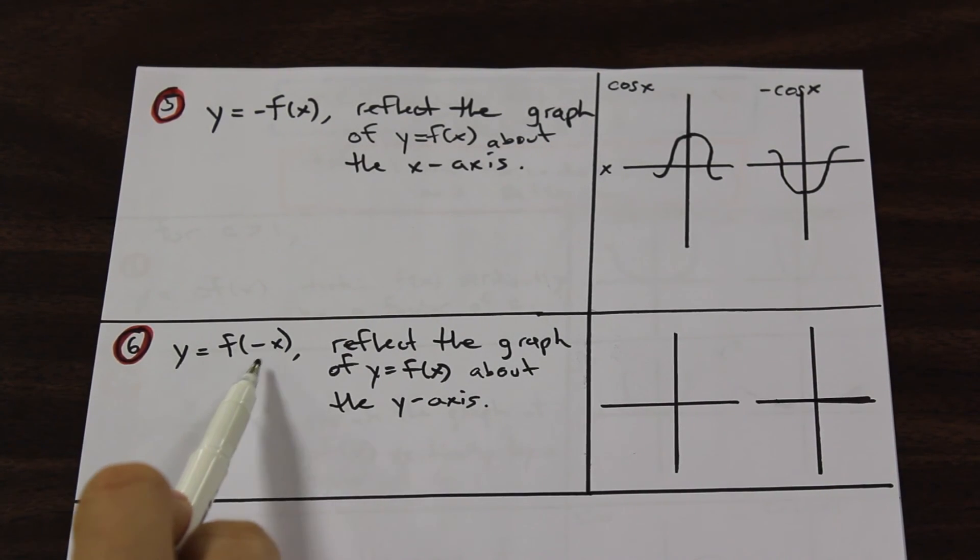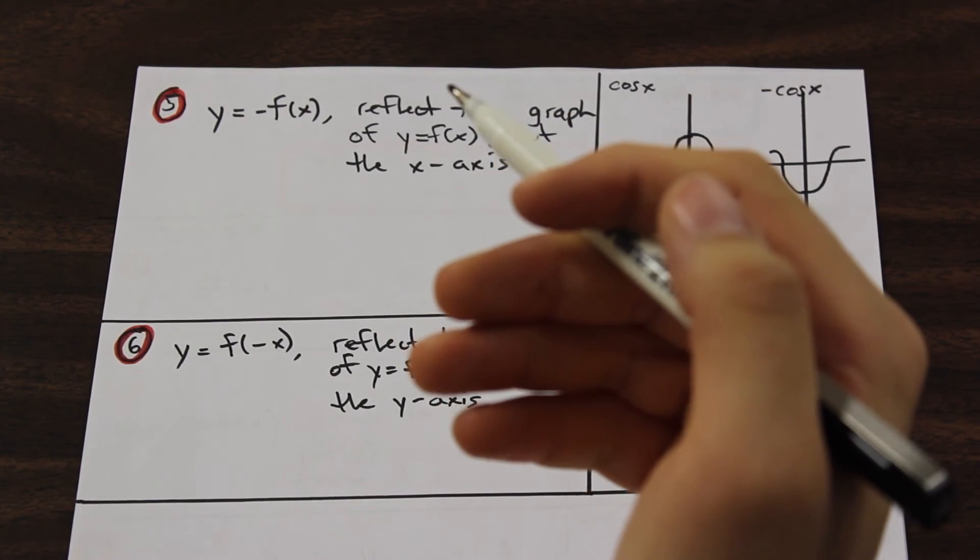And then we have y equals f of negative x. And this is where that even and odd function thing comes in. Because I'm going to use tan x as a result of that.